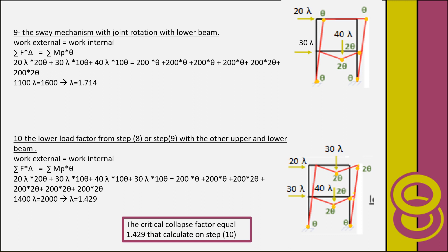Step nine — sway mechanism with joint rotation with the lower beam: using the main equation, work external equals work internal, gives lambda = 1.714. Then in the last step, the lower load factor from step eight or step nine — here the lower one is step nine — so we add it to the upper beam and apply the main equation to find lambda = 1.429. The critical collapse factor equals 1.429, calculated in step ten. This is the factor at which the frame fails.